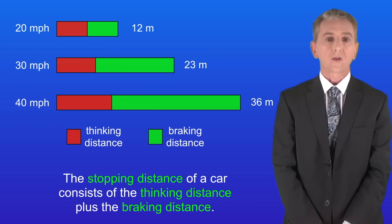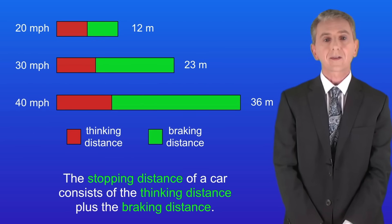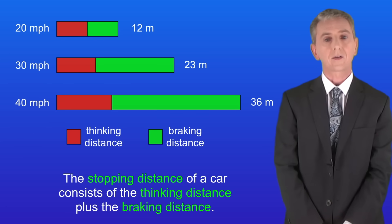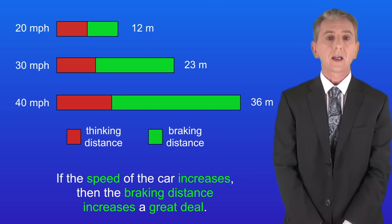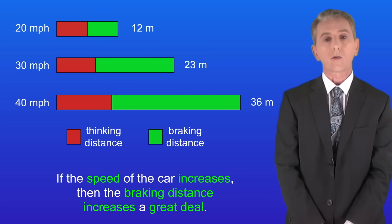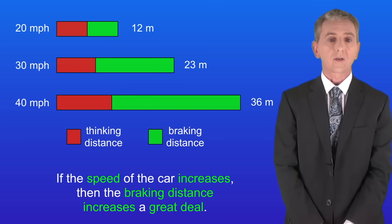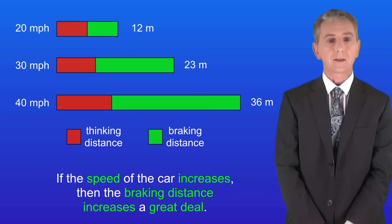In the last video we saw that the stopping distance of a car consists of the thinking distance plus the braking distance. As you can see, if the speed of the car increases then the braking distance increases a great deal.